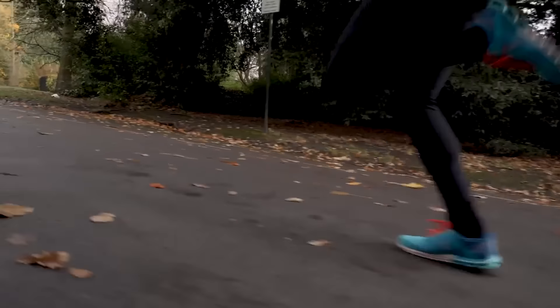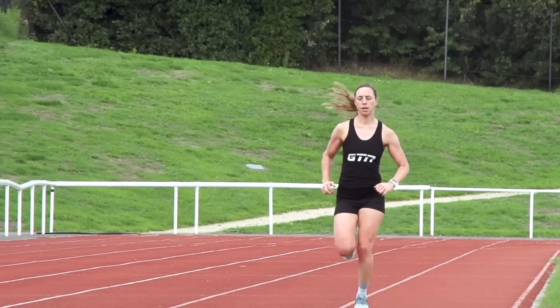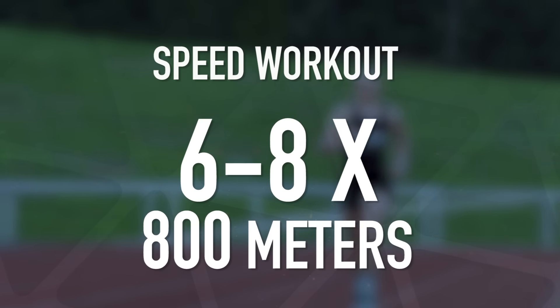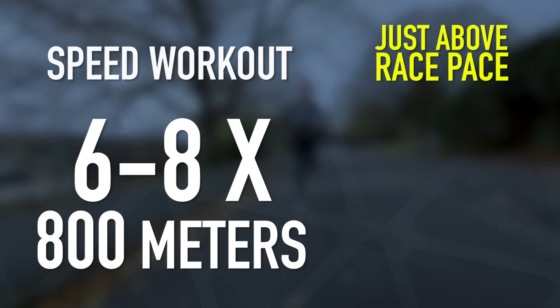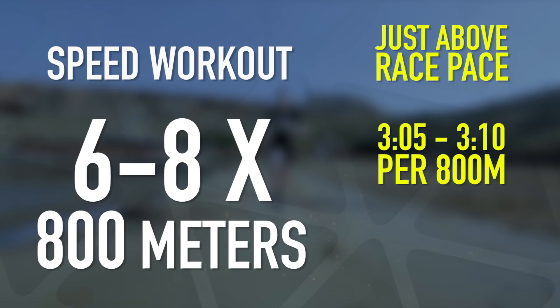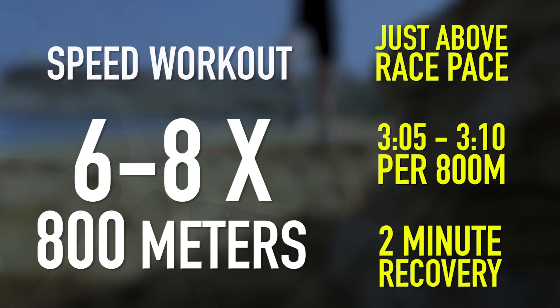Speed work sessions help with your top-end speed, but if done correctly they're going to hurt. It's about quality — running faster than your race pace for shorter intervals. For example, a session of six to eight by 800 metres targeting just faster than race pace: race pace being 96 seconds per lap gives us three minutes five to three minutes ten per 800 metres, with two minutes of rest between each rep. Each week, progress by reducing rest and/or increasing the number of reps, keeping the pace the same.